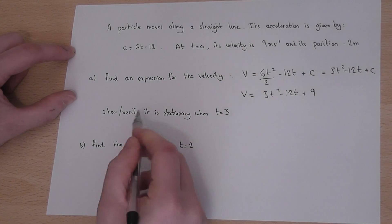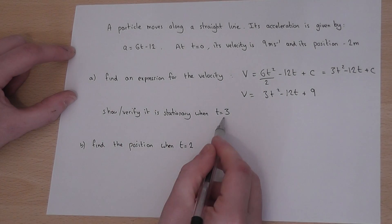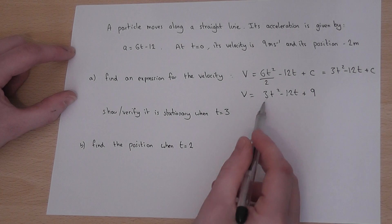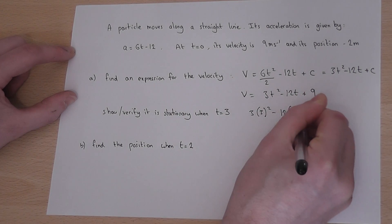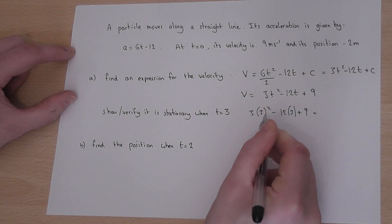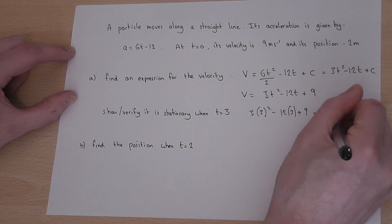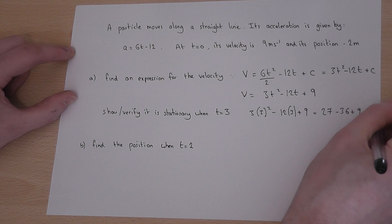To show how it is stationary when t is 3, we let t equal 3. So 3 times 3 squared take away 12 times 3 plus 9. Well 3 squared is 9 times 3, 27, take away 36 plus 9. The answer does indeed equal 0.